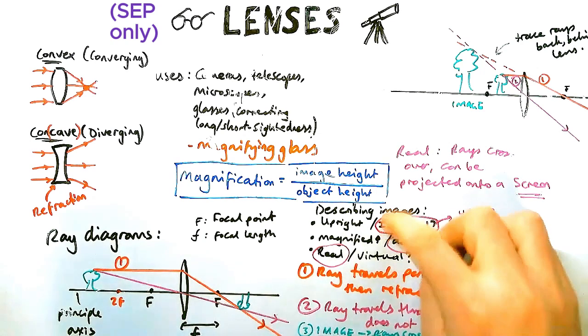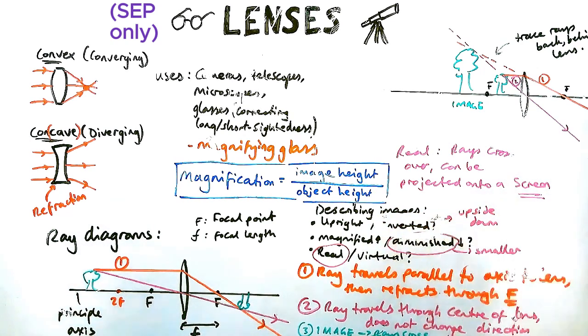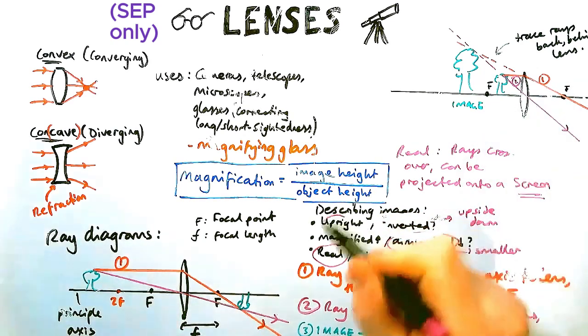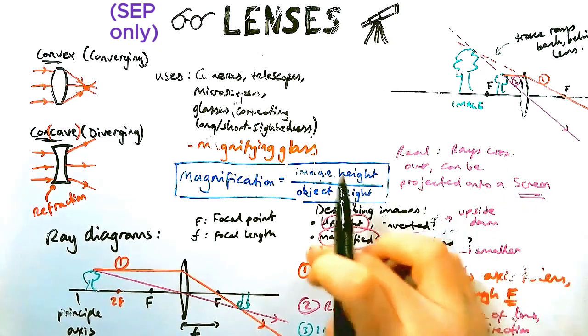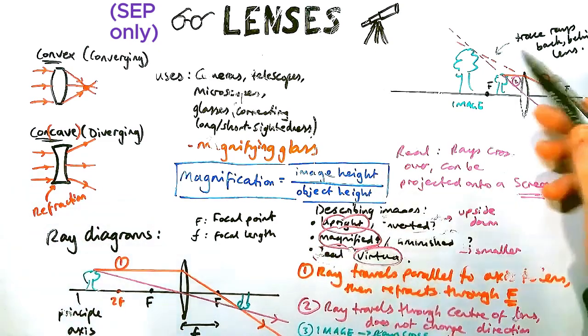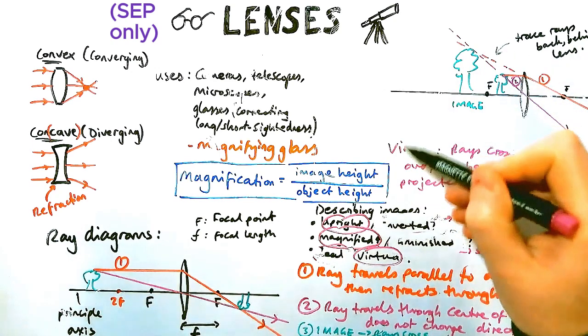Let's go about describing this new image then. So it's actually the exact opposite of the previous image. It's now upright. It's the right way up. It's magnified. And it's actually not real because the rays of light did not cross over. We had to trace them back to cross over.